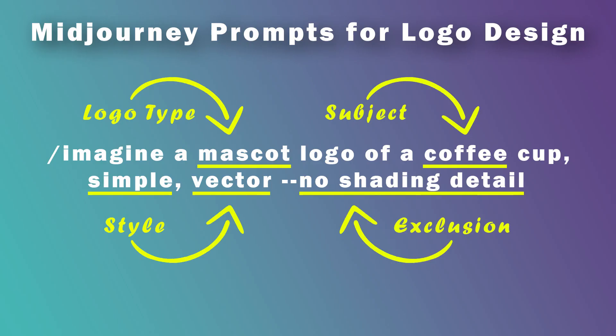I like to break down my logo design prompts into four different main parts: logotype, subject, style, and exclusion. Of course there are more parameters and descriptors that you can add, or some that you don't need to add. But I have found that I get the best results when I include at least these four things.